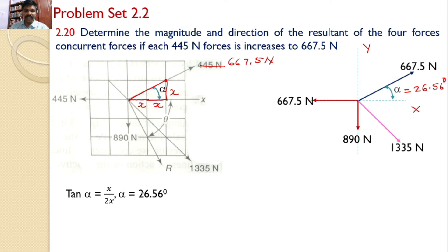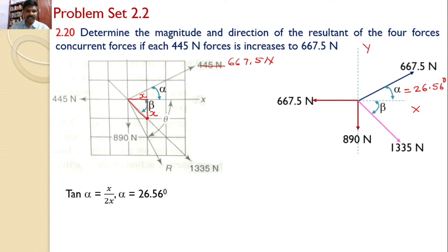Similarly, the 1335 Newtons force makes an angle beta with the X axis. Transferring beta onto the diagram, to find beta, the 1335 Newtons force intersects the graph at a certain point. Constructing a right angle triangle, this is one unit, and this is X by X, so tan beta equals X divided by X, giving beta equal to 45 degrees.